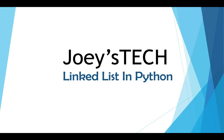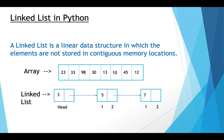Before we begin coding, let's know a little bit about linked list. A linked list is a linear data structure in which, unlike arrays, the elements are not stored at contiguous memory locations. You can see an array where elements are stored at contiguous memory locations, but in a linked list the elements are linked using pointers and are not stored at contiguous memory locations.